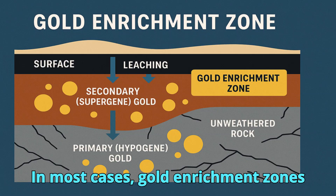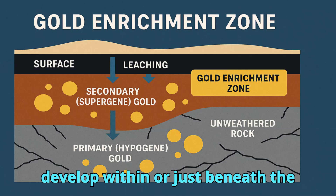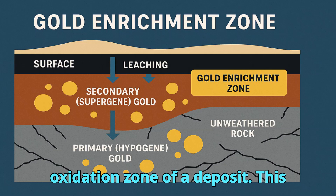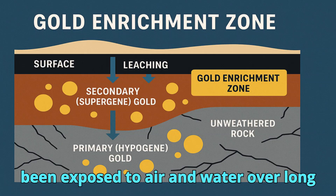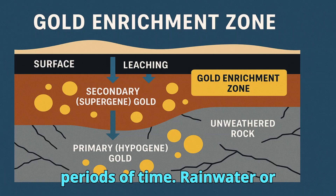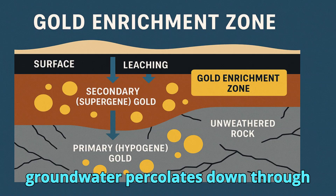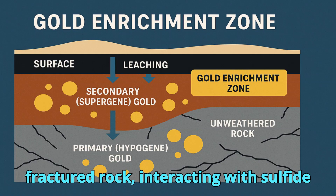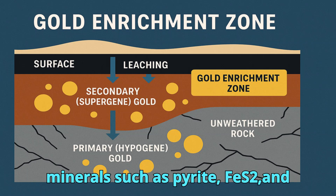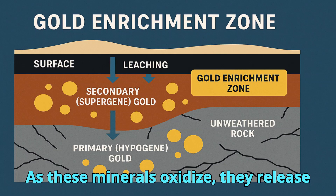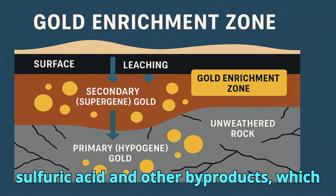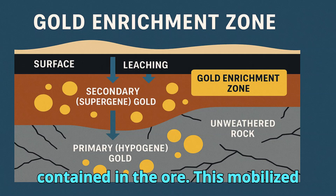In most cases, gold enrichment zones develop within or just beneath the oxidation zone of a deposit — the upper part of an ore body that has been exposed to air and water over long periods of time. Rainwater or groundwater percolates down through fractured rock, interacting with sulfide minerals such as pyrite and arsenopyrite. As these minerals oxidize, they release sulfuric acid and other byproducts, which in turn dissolve and mobilize the gold contained in the ore.